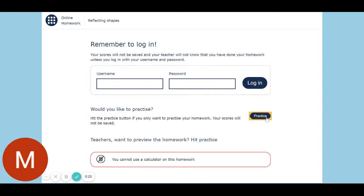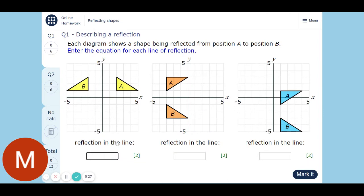Each diagram shows a shape being reflected from position A to position B. Enter the equation for each line of reflection. You can find where the mirror line is by just figuring out where the middle is. So these are four squares apart, so the middle will be two squares apart, so it's going to be this line here.